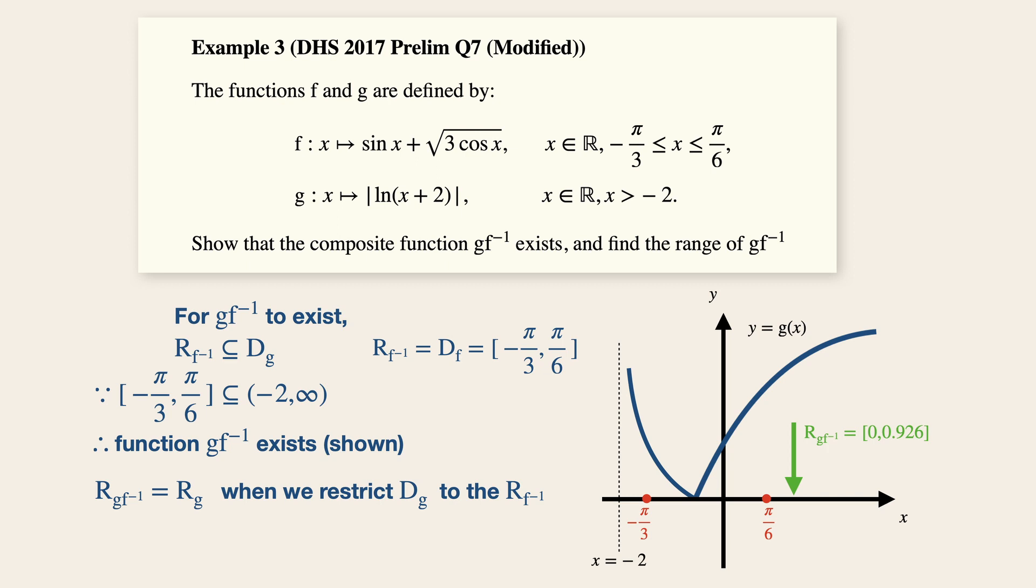Alright, so the maximum value is actually zero point nine to six, or when we substitute pi over six into the function G. Thus, the range of G F inverse will be zero to zero point nine to six inclusive.